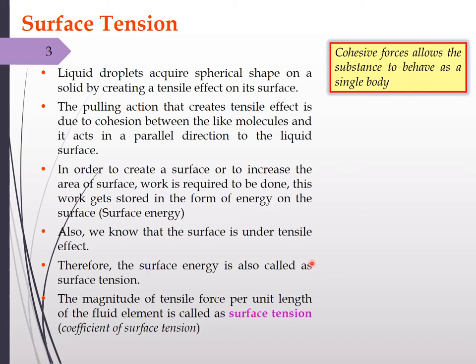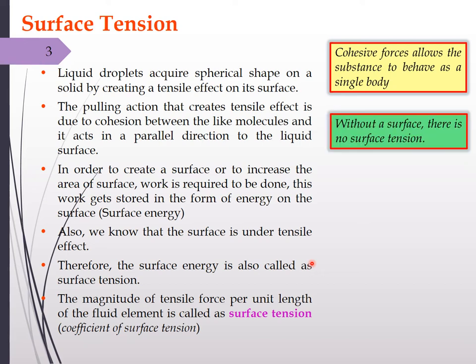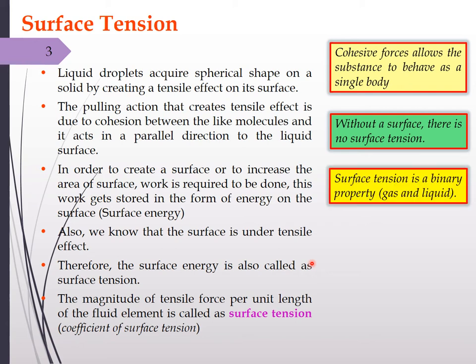Surface tension can be defined as the magnitude of the tensile force acting per unit length of the fluid element, also called the coefficient of surface tension. Essentially, surface tension is the energy required to create a unit area or to increase the area of an existing surface. Without a surface there will be no surface tension.